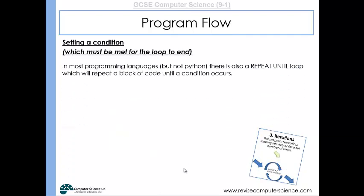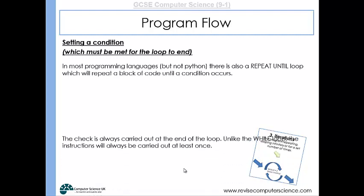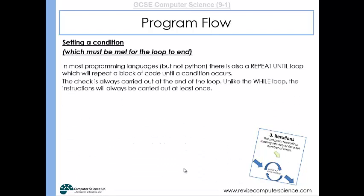In most programming languages, not Python, there is also a repeat-until loop which repeats a block of code until a condition occurs. This is where the check is at the end of the loop. Unlike the while loop, the instructions will always be carried out at least once—we do the action and then check whether to repeat it.